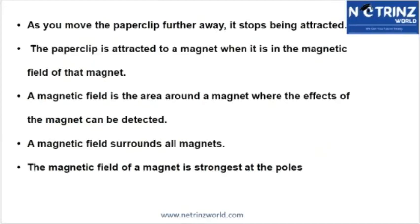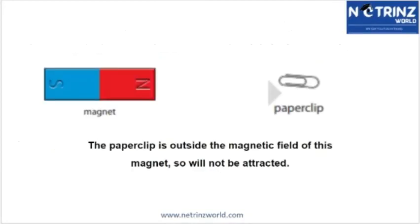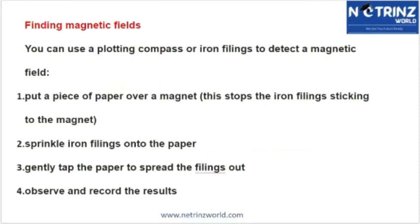A paper clip outside the magnetic field of the magnet will not be attracted. There is a certain area around the magnet — only when a metallic part enters this field will it get attracted. If the paper clip is far away from the magnet, it is also away from the magnetic field, and that is why it is not attracted. At that distance, the magnetic field does not reach.